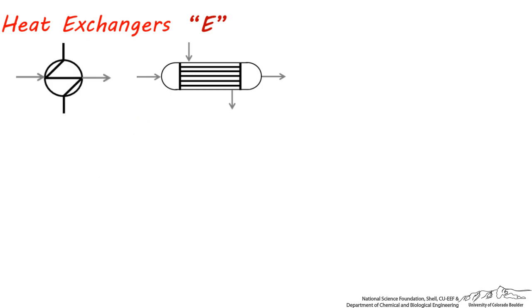Let's next look at some typical utility streams. There are about eight common utility streams you'll see in a process flow diagram, and they each have a unique lower case abbreviation.